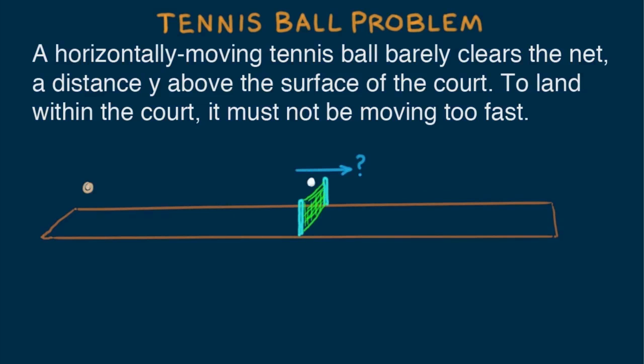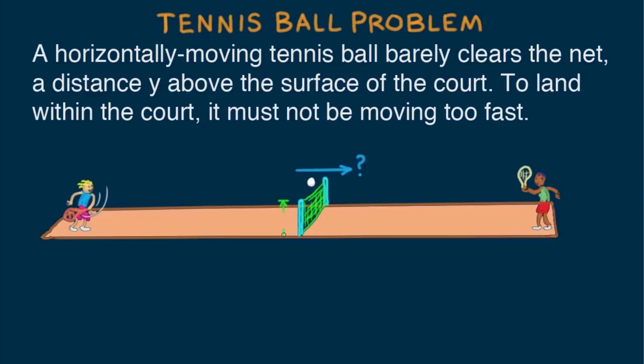A horizontally moving tennis ball barely clears the net a distance y above the surface of the court. To land within the court it must not be moving too fast.